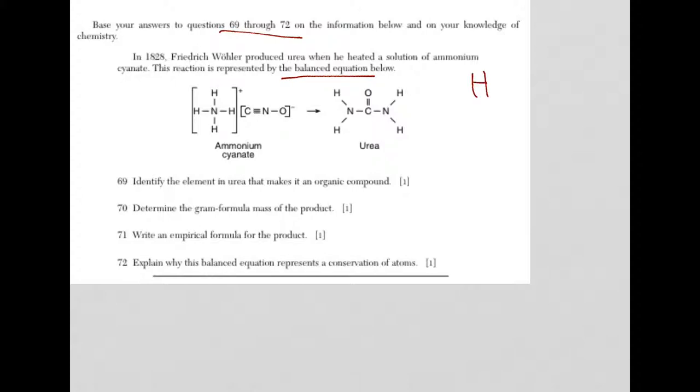For urea, what do I have? I have hydrogen, nitrogen, carbon, and oxygen. Now I need to know how many times they're appearing in the formula. Hydrogen appears four times. Nitrogen looks like twice. Carbon once. And oxygen once.